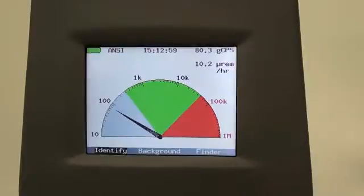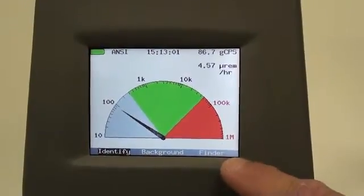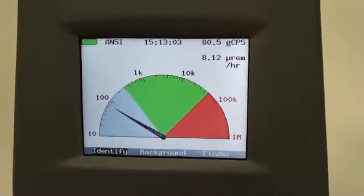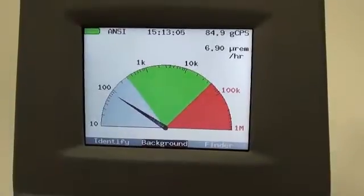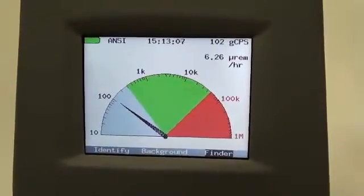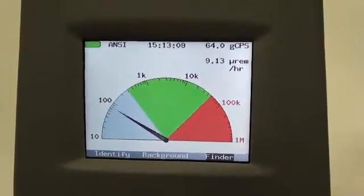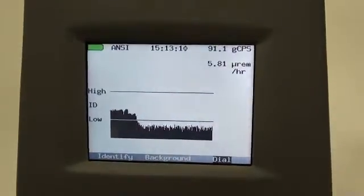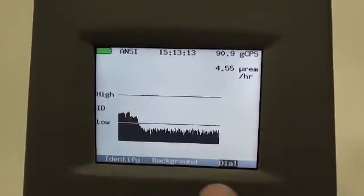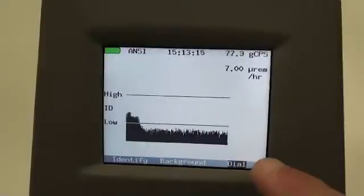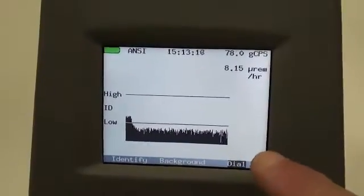I will now go into the next feature which is the finder feature. Again I'll use the scroll button to scroll over to finder and I'll hit the enter button. And again it's measuring the background level and you see the background level is below the low level limit.